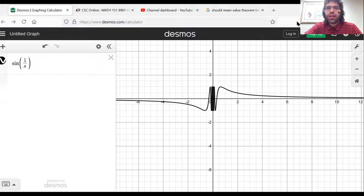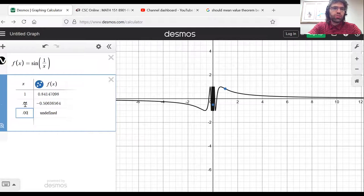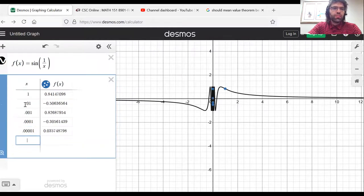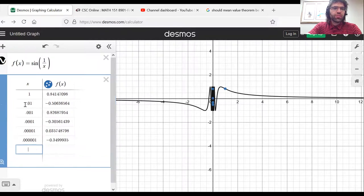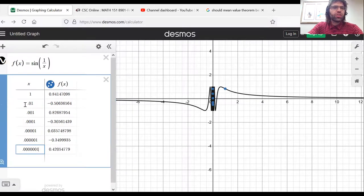And if you look at a table, as x gets closer and closer to zero, these values of f(x) aren't going anywhere in particular.